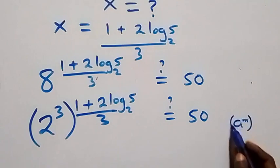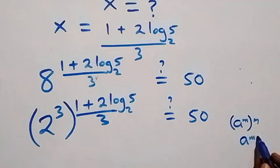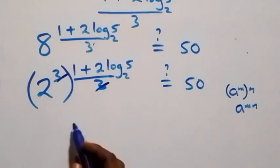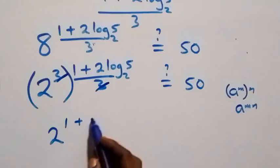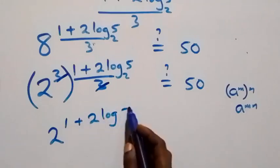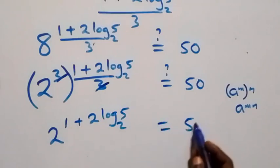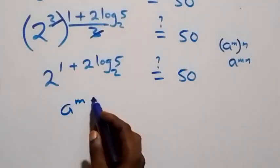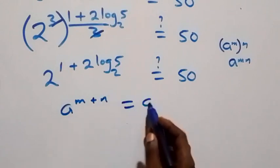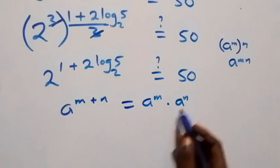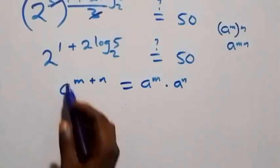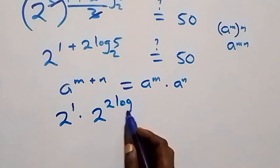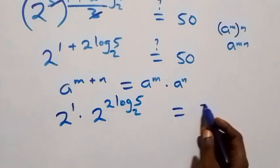Using the rule a raised to power m raised to power n equals a raised to power m times n, the 3 here cancels with the denominator 3, and we are left with 2 raised to power 1 plus 2 log base 2 of 5, equals to 50. This also follows from the rule a raised to power m plus n equals a raised to power m times a raised to power n.